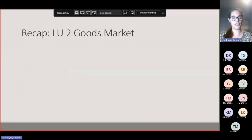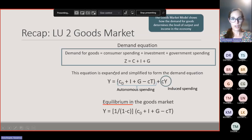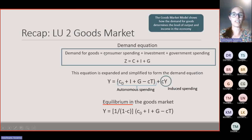Let's recap the goods market. The model shows how demand for goods is determined and how demand for goods determines the level of output and income in the economy. The demand equation states that demand for goods equals consumer spending plus investment spending plus government spending: Z = C + I + G. We expanded this equation, breaking components down into smaller parts, and simplified the demand equation into autonomous spending and induced spending.